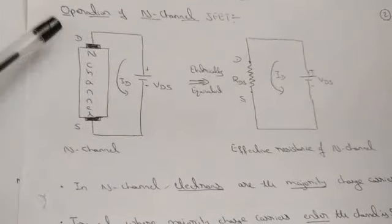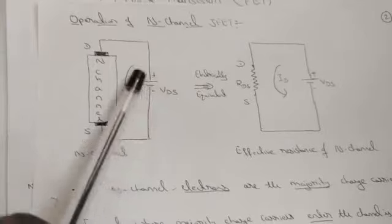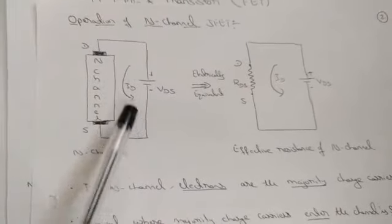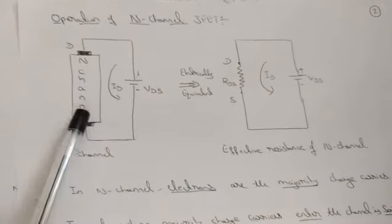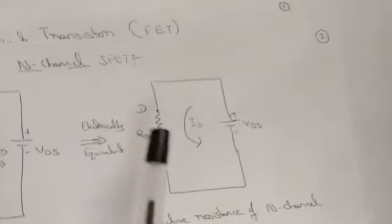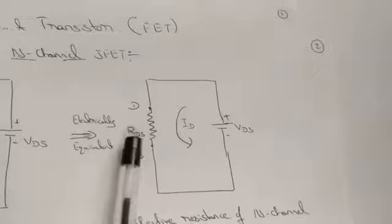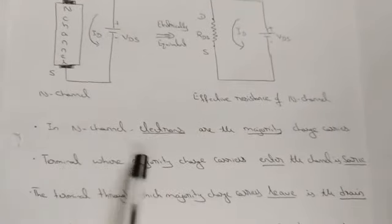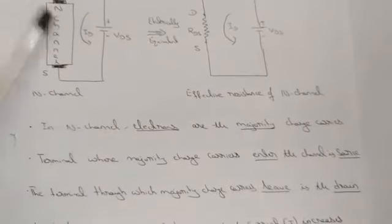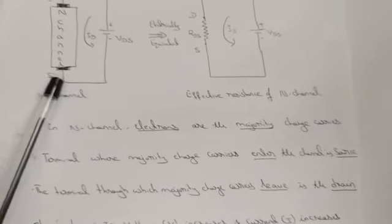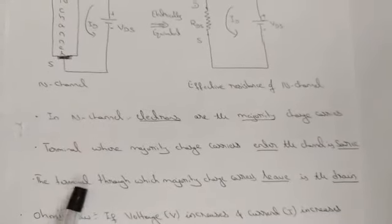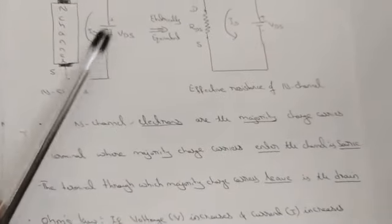For the operation of N-channel JFET, the drain and source are placed, and a voltage VDS is applied — the power supply giving drain current ID. The N-channel is replaced by its electrical equivalent: a resistance RDS between drain and source. Since it is N-channel, electrons are majority carriers; they enter at the source and leave at the drain. As voltage increases, current increases proportionally, obeying Ohm's law.